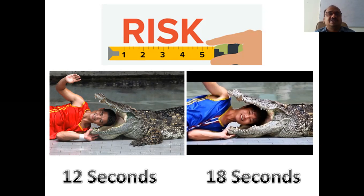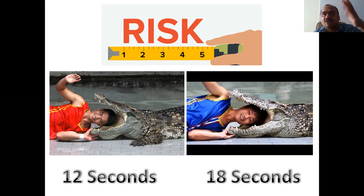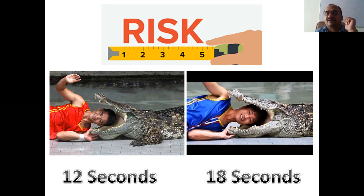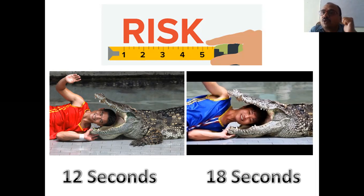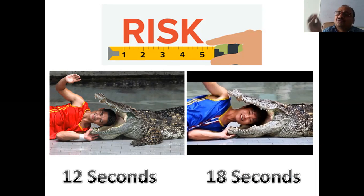Here is an example. This person kept his head in the mouth of a crocodile for 12 seconds; this other person kept it for 18 seconds. So who is taking more risk? The blue-shirt person is taking more risk. In simple terms, we can measure and compare risk like that.